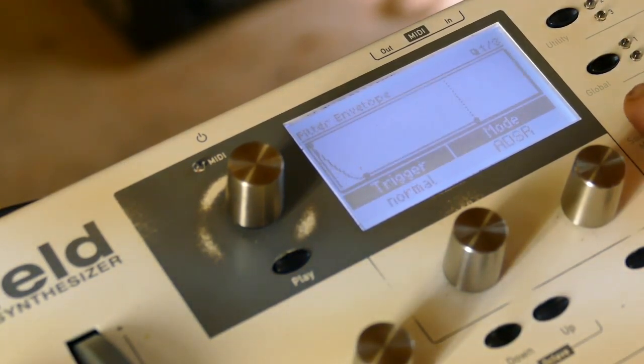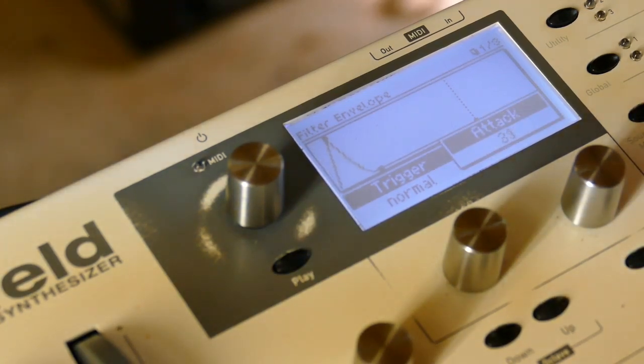I'm going to set the filter envelope first, but I won't be using it until afterwards. I'm gonna set the attack to 48, the decay to 48, the release to about 82, and amplitude release to 64.